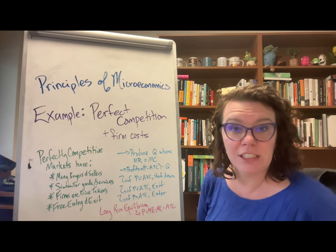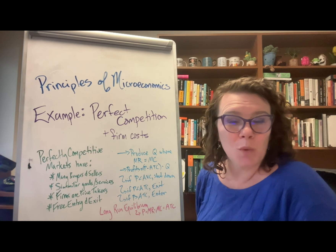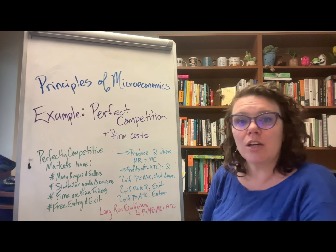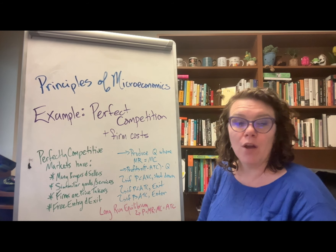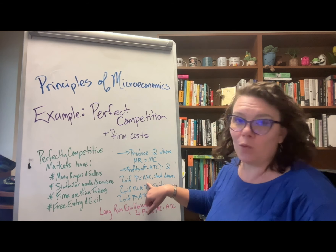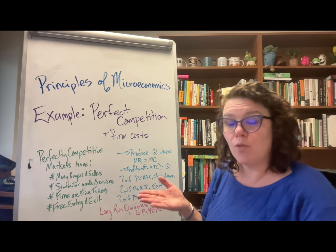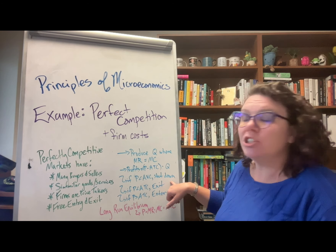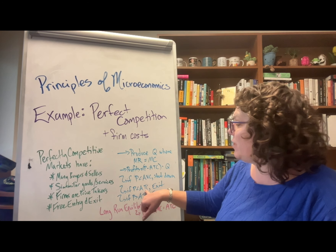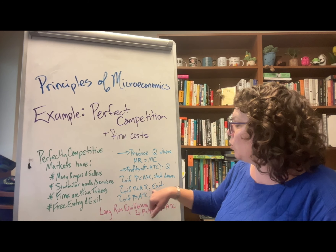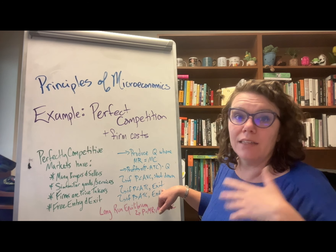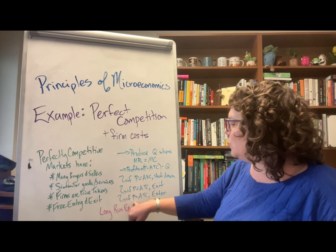We also have our shutdown rule and our exit rule. Shutdown is a short-run decision based on average variable costs, because in the short run we can't change our fixed costs — fixed costs are sunk. So in the short run, we only worry about average variable costs: if price is above, we'll produce; if price is below average variable costs, we will shut down. In the long run, we consider all costs — we look at price relative to average total cost. If price is below average total cost, firms will exit the market, sell off all their capital and fixed costs, and stop producing.